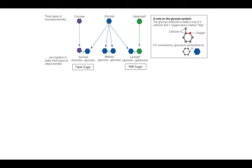Looking at monosaccharides and disaccharides: we have fructose, glucose, and galactose, and then combinations of pairs of those create sucrose, maltose, and lactose. Sucrose is table sugar and includes one molecule of fructose and one molecule of glucose. Lactose, which some of you may be familiar with, is our milk sugar and contains one molecule of glucose and one molecule of galactose. Maltose is a disaccharide but doesn't get as much attention as the other two.